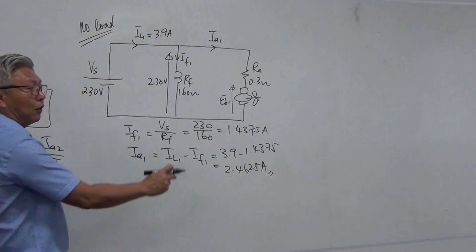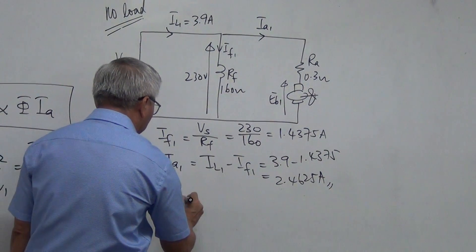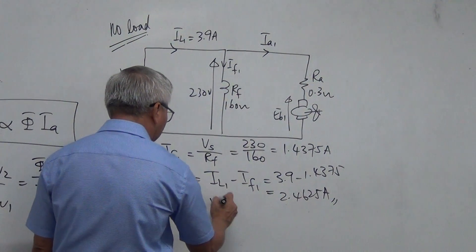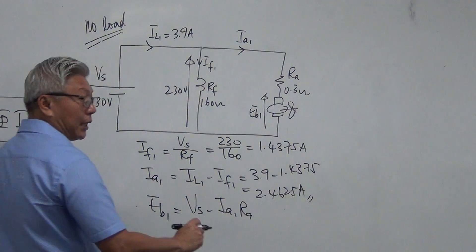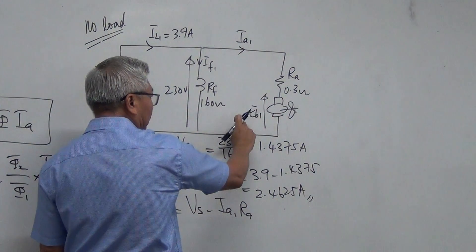Then, I move on to find my Eb1. Eb1 is equal to Vs minus Ia1 times Ra. KVL. The total voltage here is 230 volt. If I know this voltage and take away this, I will get Eb1.